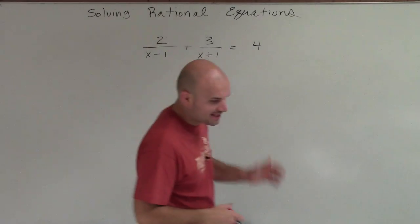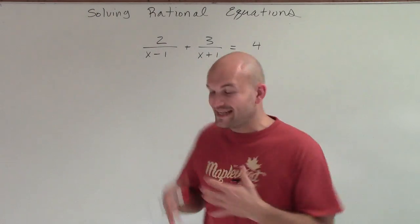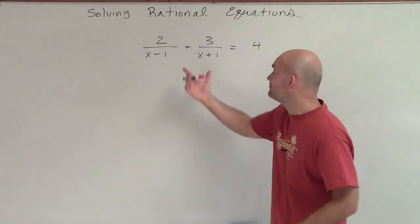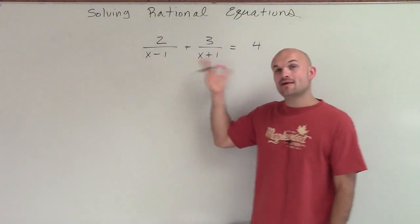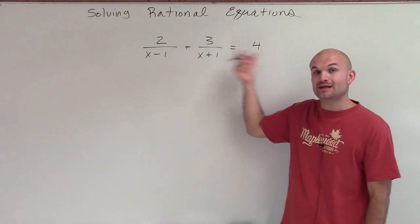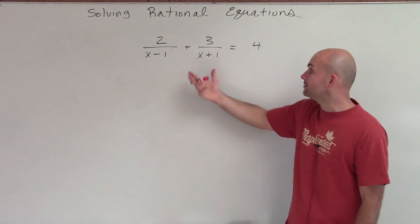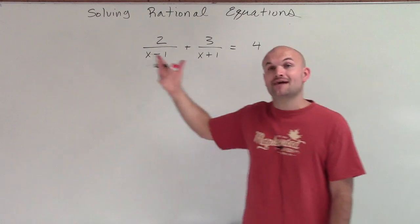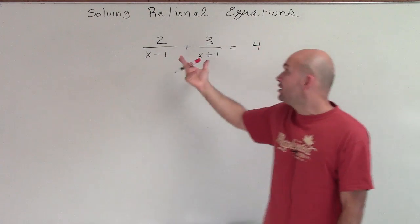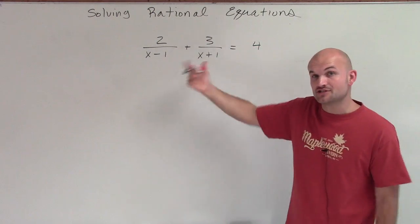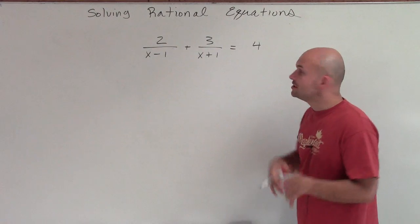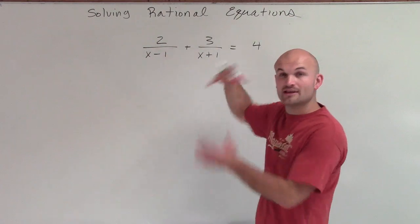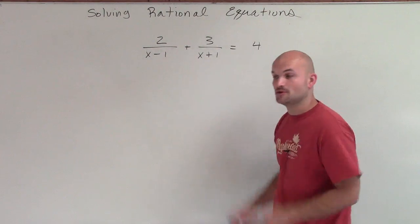Welcome. For a problem like this, we can't apply cross multiplication like we did with a similar problem, because we don't have a proportion — we don't have one ratio equal to another ratio. We have to complete the sum of our two rational expressions before we could use cross multiplication. So that's one way we could do that: combine these two, and then apply cross multiplication.